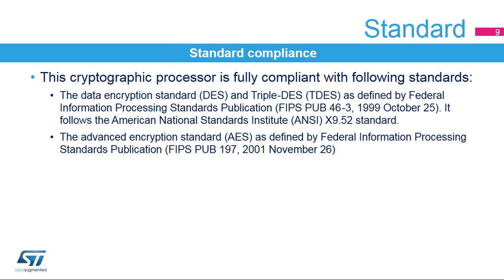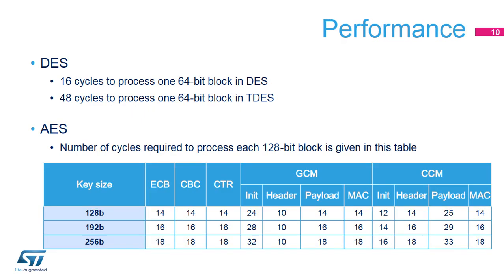The cryptographic processor complies with the Data Encryption Standard and the Advanced Encryption Standard, published under Federal Information Processing Standards Publications. Processing times are given for block operations. DES and Triple DES operations are based on a 64-bit block, while AES is based on a 128-bit block. Triple DES obviously requires three times more processing than a simple DES. For large messages of several 128-bit payload blocks, GCM is more efficient than CCM.